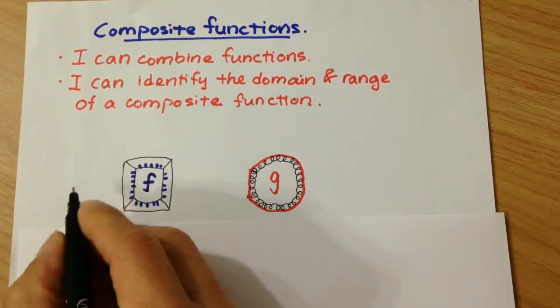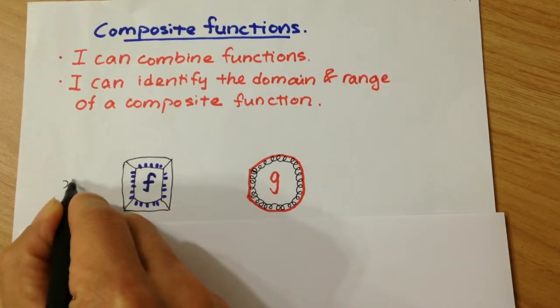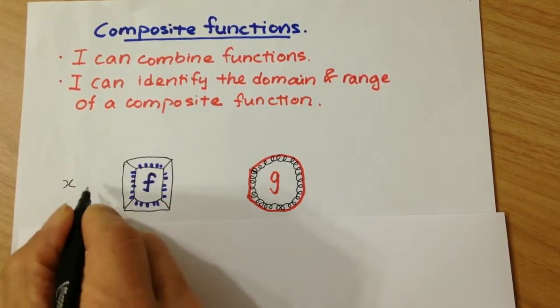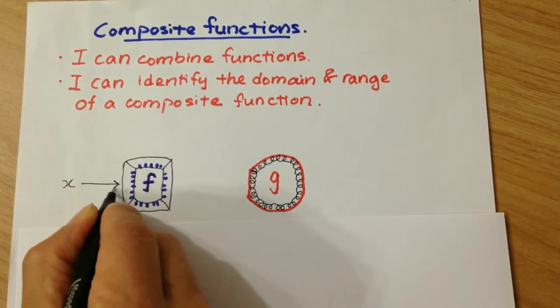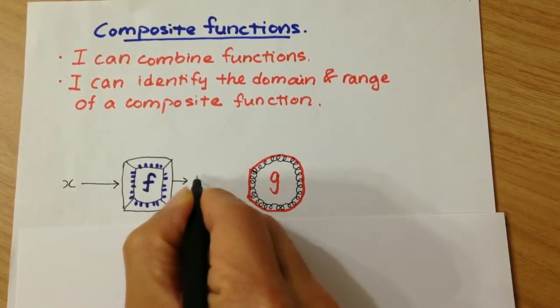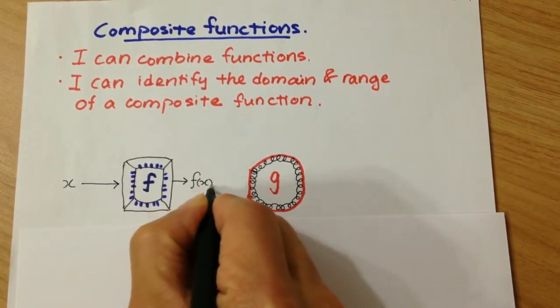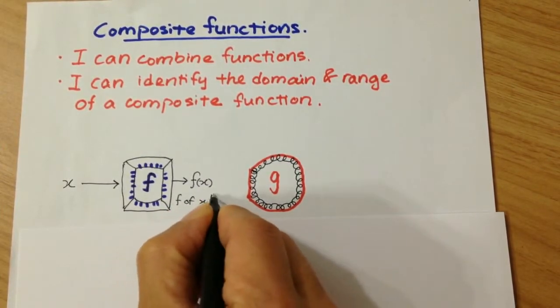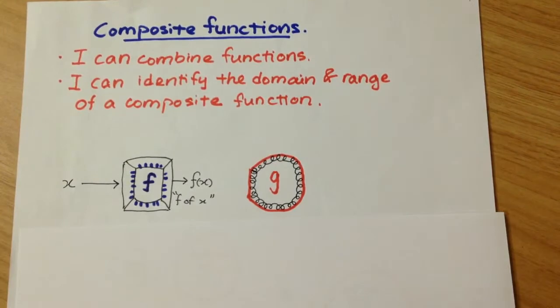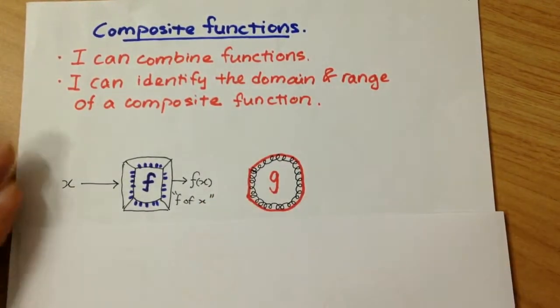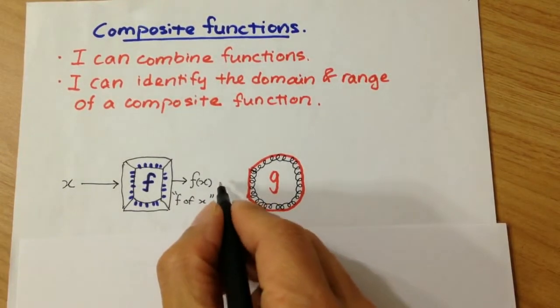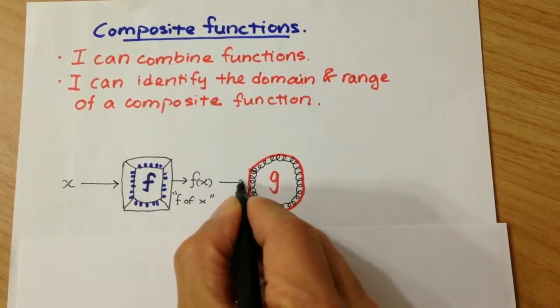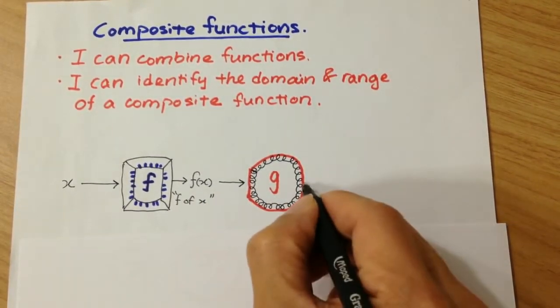So what we can do is let us allow an input x to go into the machine f. The output will be f of x, and this is read as f of x. And this output of machine f is acceptable as the input of machine g.